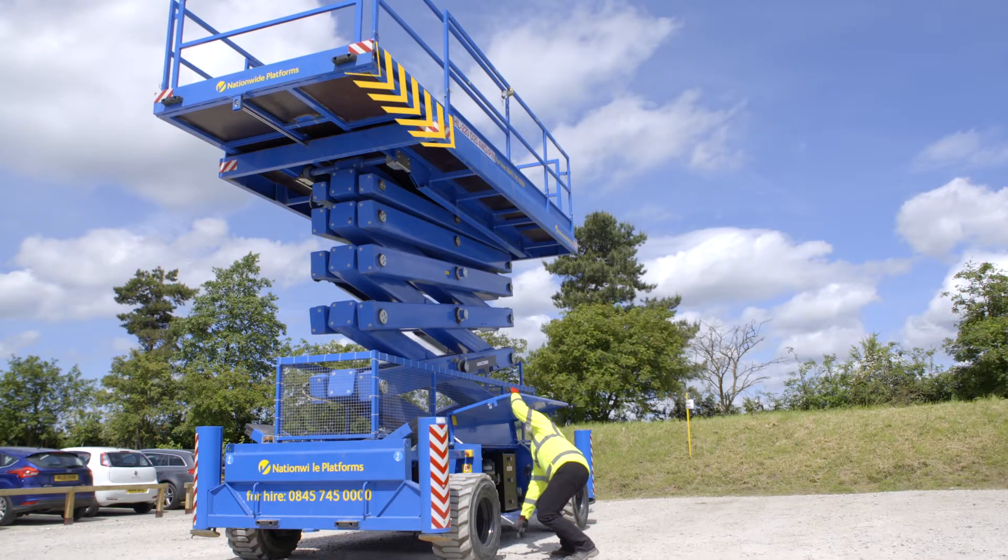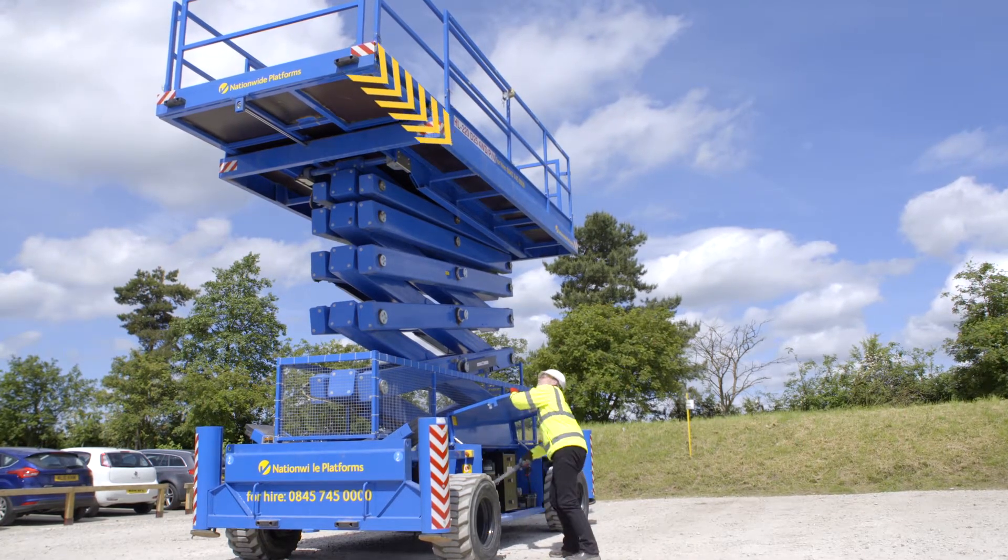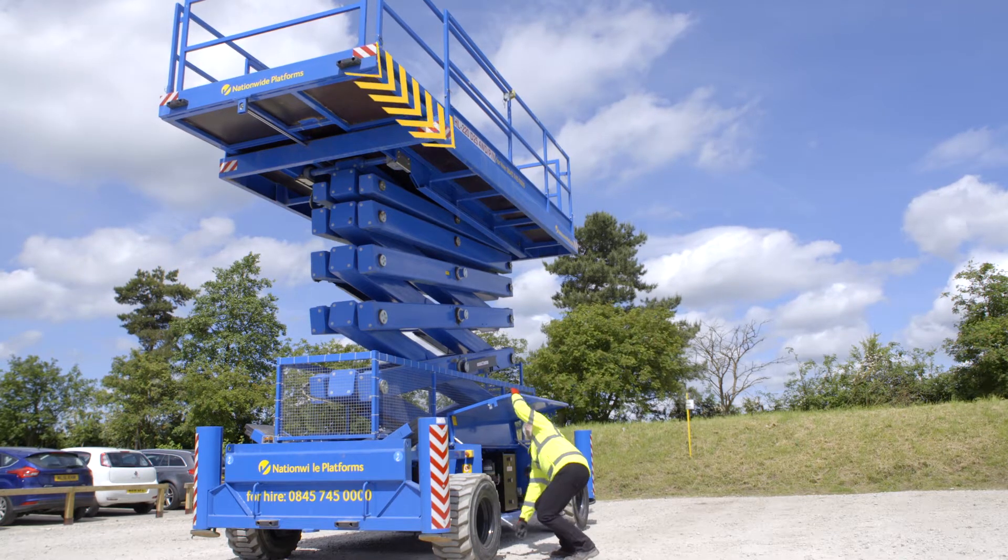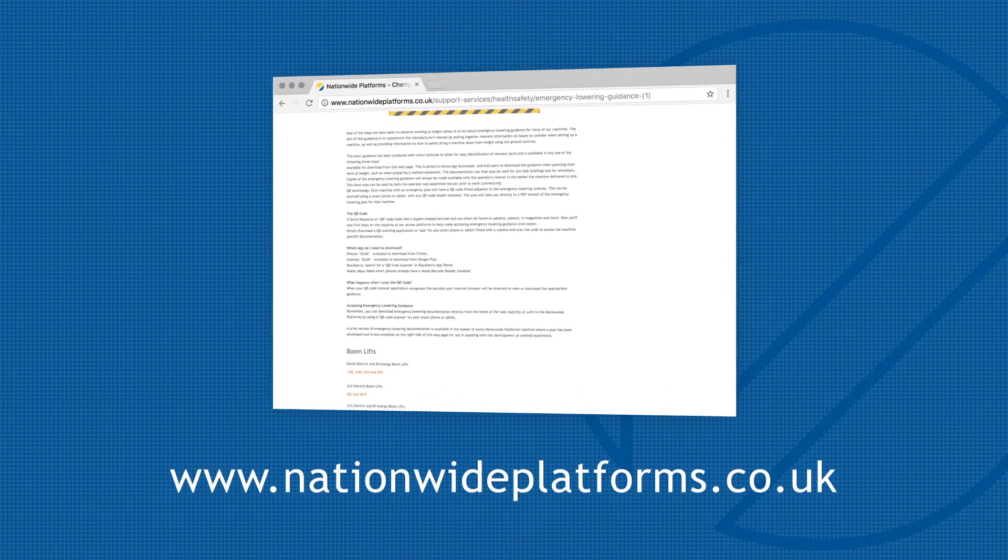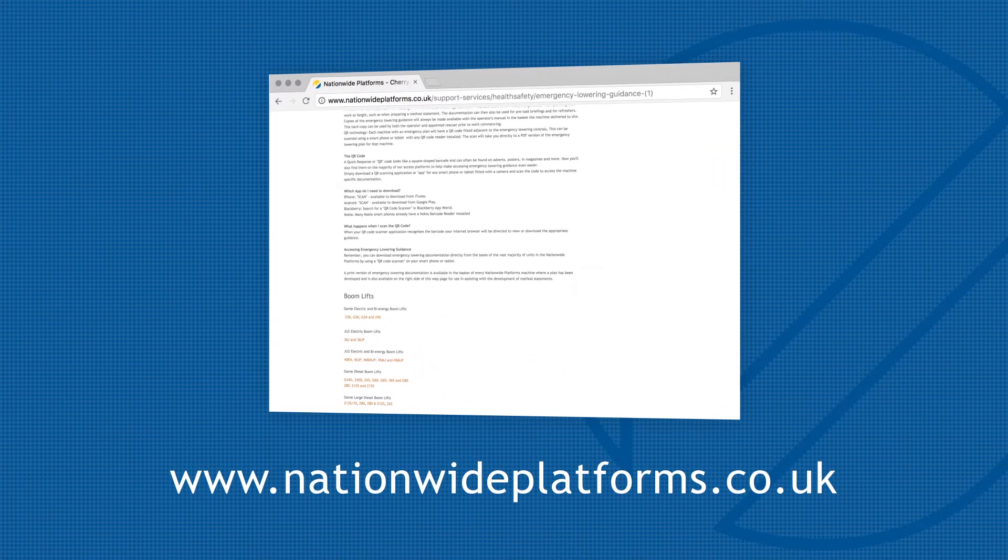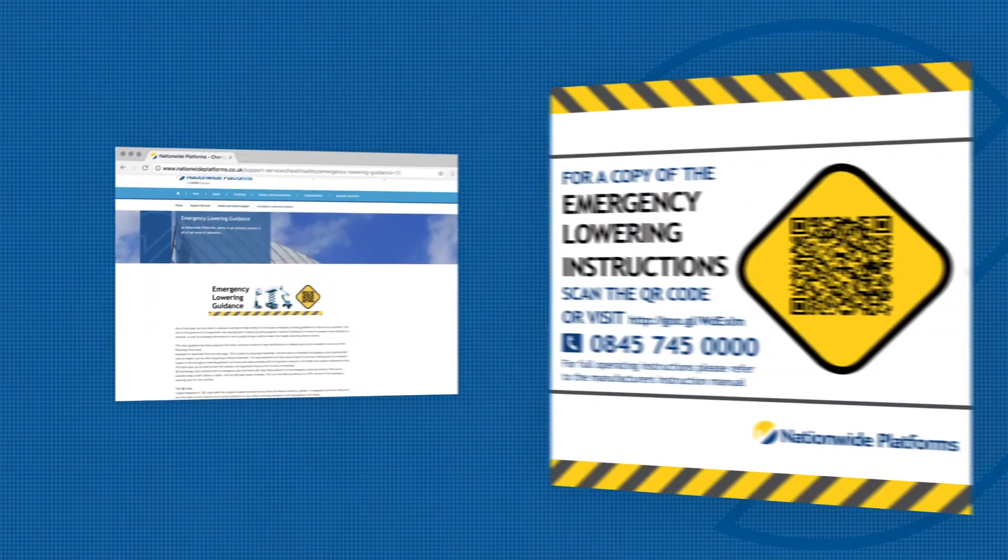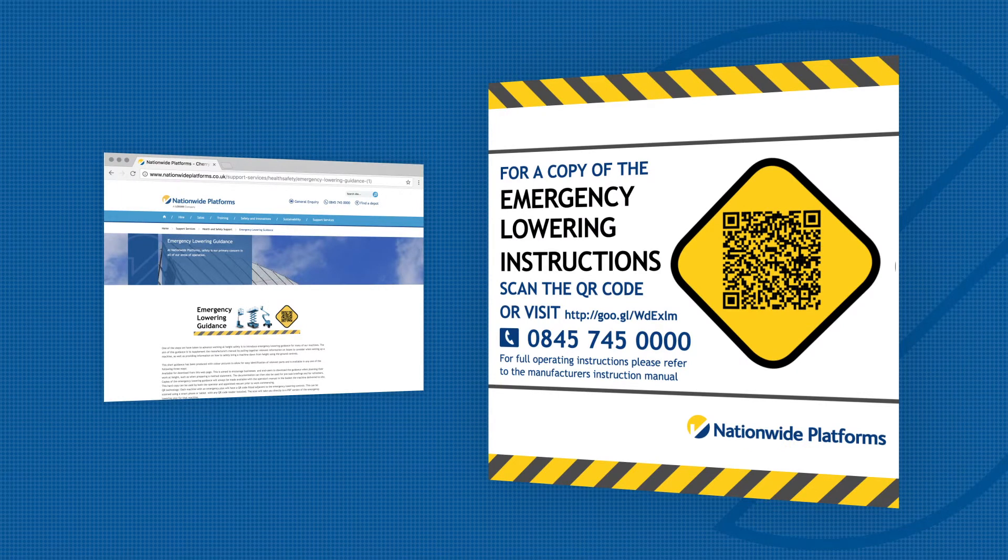If the platform is extended and preventing it from being lowered, it can be retracted using the hand pump in the valve box. All emergency lowering plans can be viewed and downloaded from nationwideplatforms.co.uk, or scan the QR code on the machine.